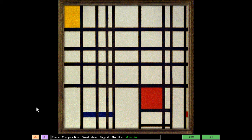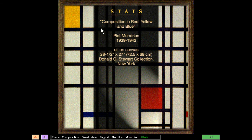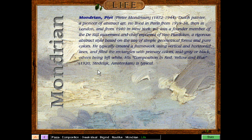Very avant-garde piano playing right here — very funky little jazz. Let's check out the stats: this is oil on canvas. You can go check it out in New York. Let's check out the life of this painter. Piet Mondrian was a Dutch painter and pioneer of abstract art. He lived in Paris from 1919 to 1938, then in London from 1940, then in New York. He was a founder and member of the de Stijl movement and chief exponent of neoplasticism — a rigorous abstract style based on the use of simple geometrical forms and pure colors. He typically created a framework using vertical and horizontal lines and filled the rectangles with primary colors, mid-gray or black, others being left white. His Composition in Red, Yellow and Blue from 1920 is typical of that style.